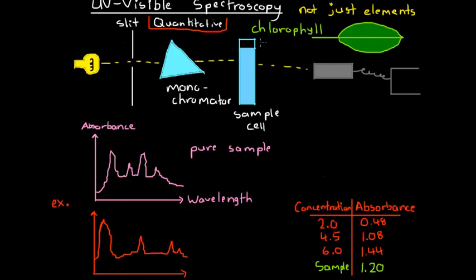We also want to make sure we choose a wavelength that is not going to be absorbed highly by the other leaf matter in our solution, because that will introduce errors. So we want a wavelength absorbed strongly by chlorophyll but not strongly by the other leaf matter in our solution. Once we've chosen our wavelength, we set our monochromator and slit so that is the only wavelength passing through. We conduct this pure sample spectrum, select the wavelength, and set it up.